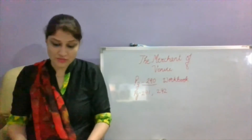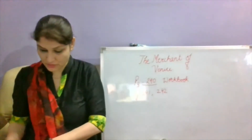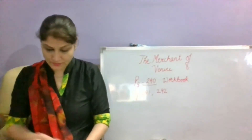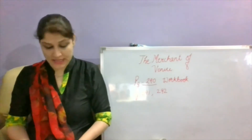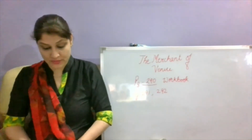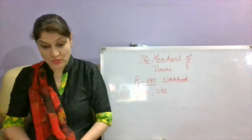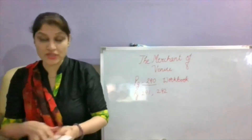Open page 290. We will start with extract number 85. This is the speech of Shylock where he says: "So can I give no reason, nor I will not, more than a lodged hate and a certain loathing I bear in tune you, that I follow thus a losing suit against him? Are you answered?" Now this is the place where Shylock was talking to the Duke.